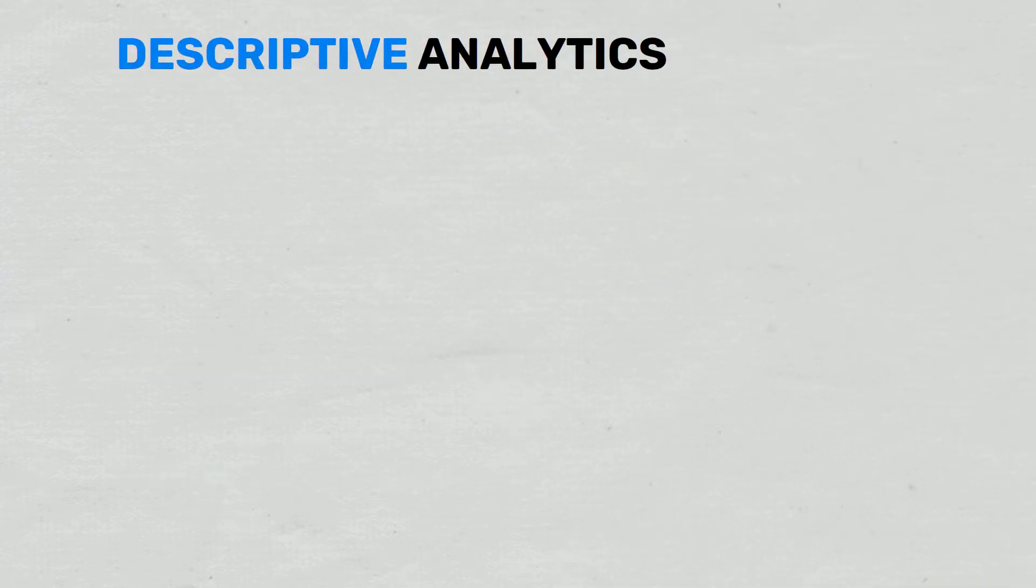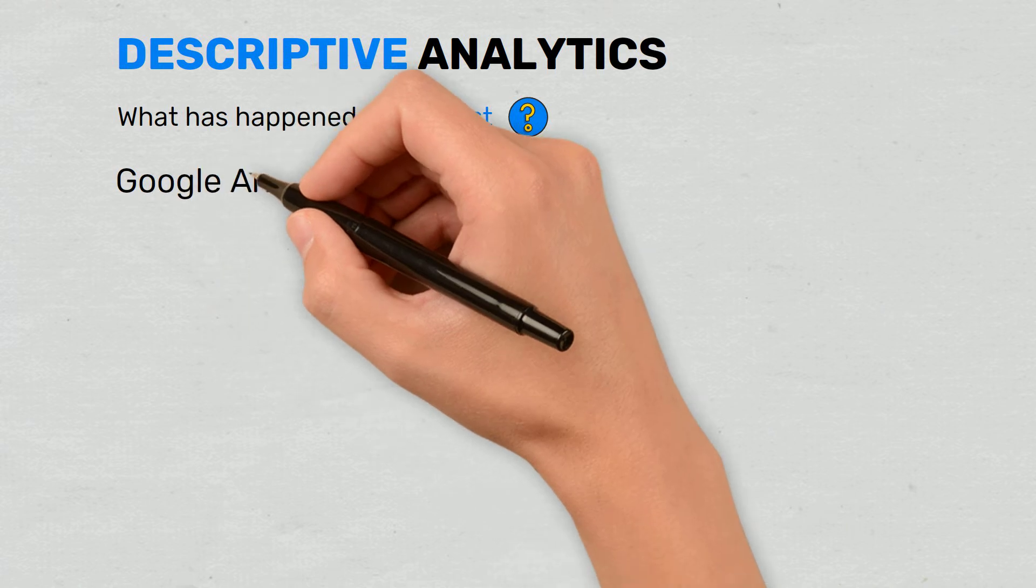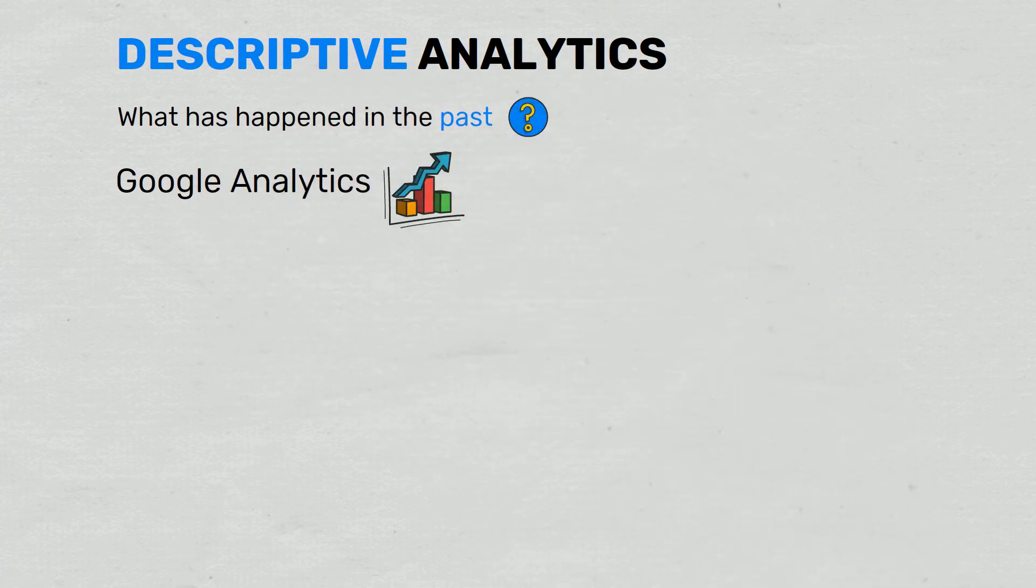The first and foundational type of data analytics is descriptive analytics. Descriptive analytics looks at what has happened in the past. The purpose of this type of analytics is to simply describe what has happened. For example, Google Analytics will show us what has happened to our site.